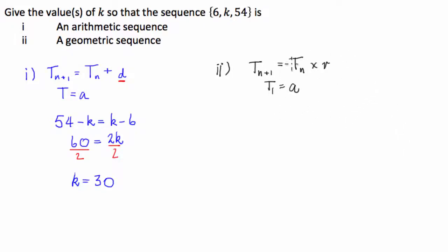Cool. So the way we can exploit this one is we know that 6 has to be multiplied by something to get to k, and k has to be multiplied by something to get to 54. And those two somethings have to be the same thing. So we can say, because we have a common ratio, that 54/k has to equal k/6.